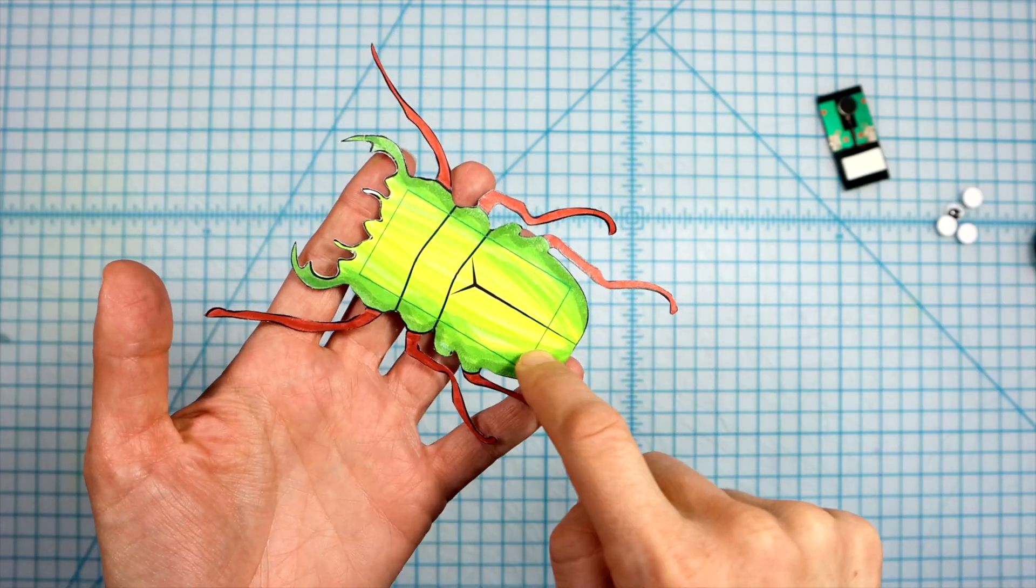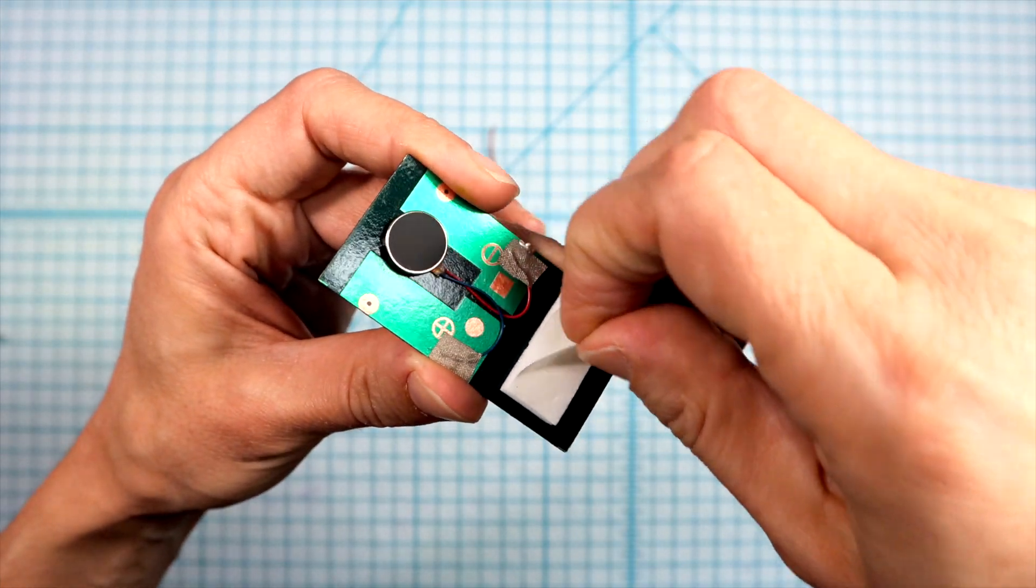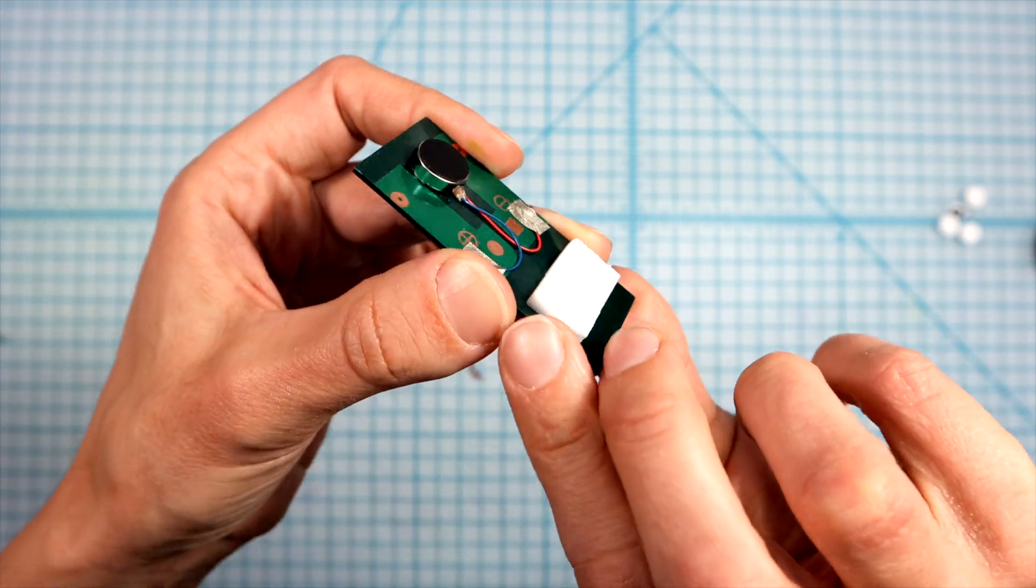Note that there's a rectangle on each body. Remove the other side of the foam tape and stick it over the rectangle.